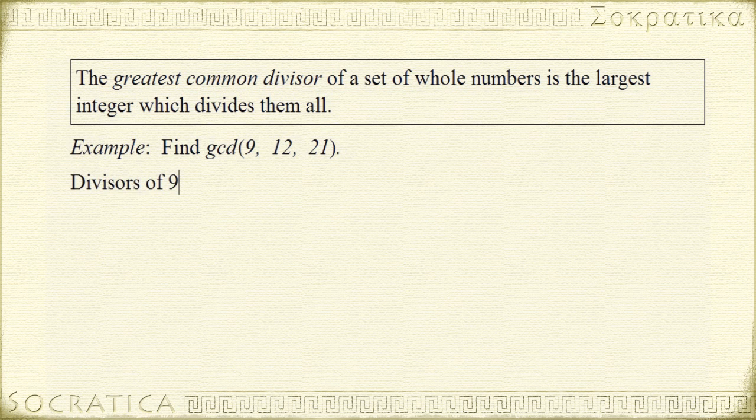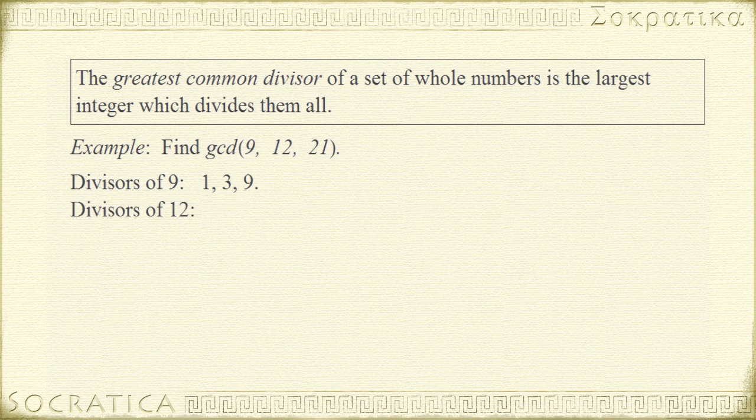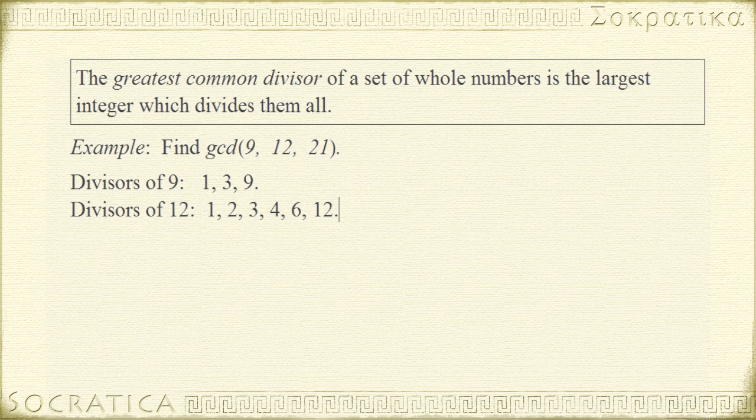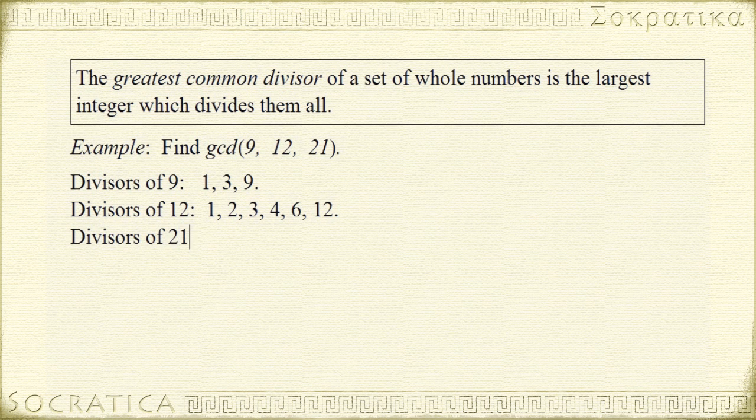So the divisors of 9 we saw above are 1, 3, and 9. The divisors of 12 are 1, 2, 3, 4, 6, and 12. And the divisors of 21 are 1, 3, 7, and 21.